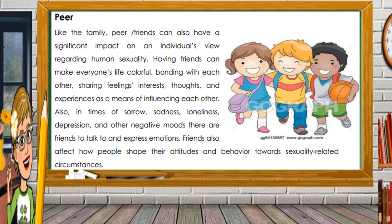Like the family, peers or friends can also have a significant impact on an individual's view regarding human sexuality. Having friends makes life colorful through bonding, sharing feelings, interests, thoughts, and experiences. In times of sorrow, sadness, loneliness, or depression, there are friends to talk to and express emotions. Friends also affect how people shape their attitudes and behavior towards sexuality-related circumstances.